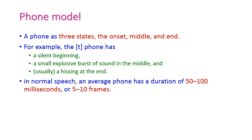The phone model has three states: onset, middle, and end. For example, taking the letter 't,' based on its position the phone has silence in the beginning, a small explosive burst sound in the middle, and usually hissing at the end. So depending on where 't' appears, the sound changes accordingly. In normal speech, the average phone duration is 50 to 100 milliseconds, or 5 to 10 frames.